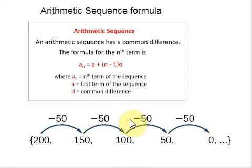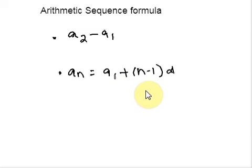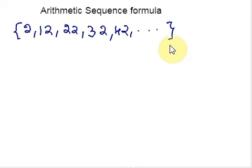Now let us see how to write the explicit formula given the first several terms of an arithmetic sequence. We just have two steps. First step is to find the common difference — the common difference is the second term minus the first term. Then substitute the common difference and the first term into the formula. This is how we write an explicit formula when several terms of an arithmetic sequence are given. Let me show you an example. Here is a sequence — write an explicit formula for this arithmetic sequence.